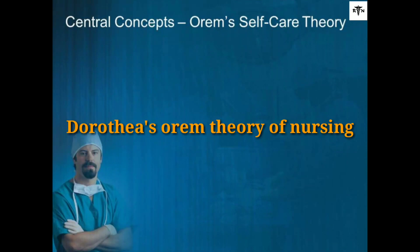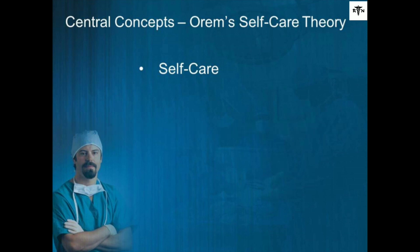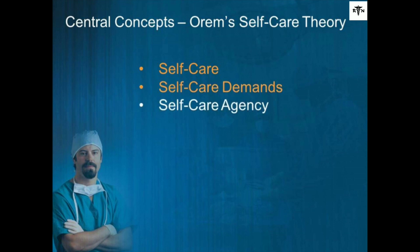Orem's self-care deficit nursing theory consists of self-care — the patient caring for themselves to maintain and sustain health and well-being. Self-care demands are the varied kinds of care needed over time to meet all the needs of the patient. Self-care agency is the power and capacity to perform self-care, tempered by factors both internal and external.